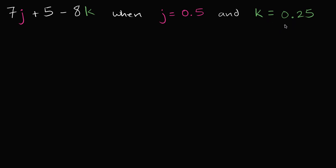So why don't you try to pause the video and evaluate this first before we work through it together. Alright, so if we want to evaluate this thing, everywhere we see a j we want to replace it with a 0.5 and everywhere we see a k we want to replace it with a 0.25. So let's do that.